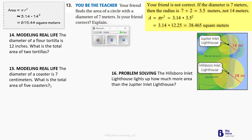Number 14 is for you to do. Number 15 says the diameter of the coaster is 7 centimeters — so we're talking about a coaster for cups. What is the total area of 5 coasters? So if the diameter is 7, just like the previous problem, we get the same area for one coaster: 38.465. We're going to take 38.465 and multiply it by 5.